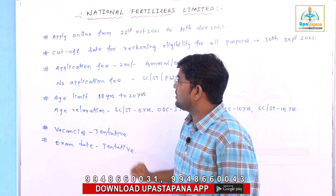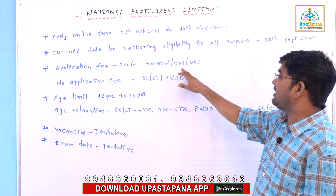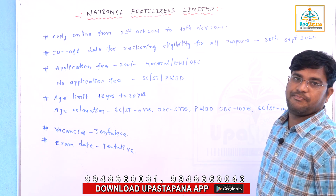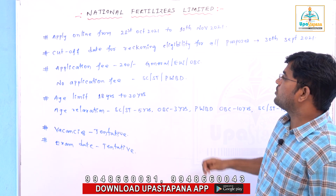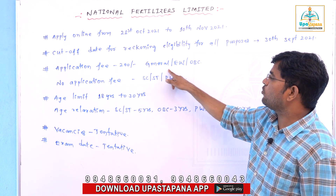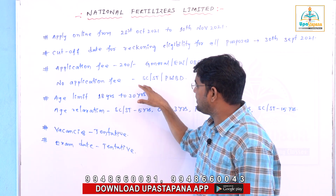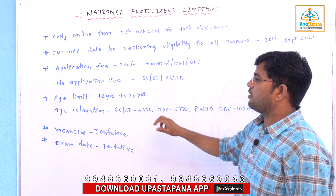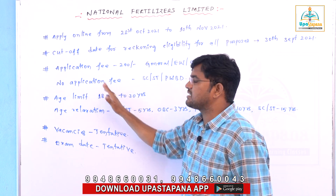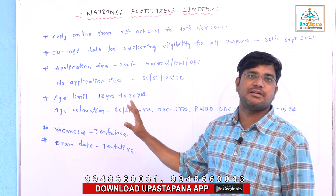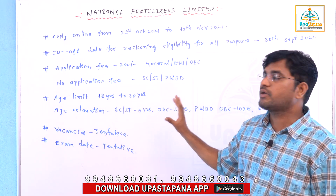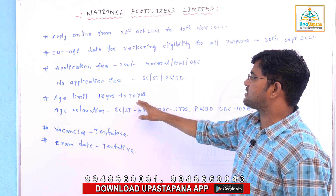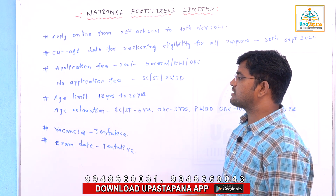The application fee is 200 rupees for General, EWS, and OBC candidates. For SC/ST and PW/BD categories, there is no application fee. The age limit is minimum 18 years and maximum 30 years.